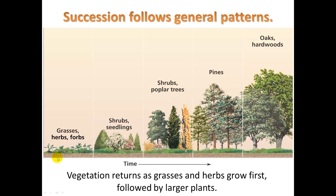There are some general patterns with this. In this diagram we have time on the horizontal axis. First we get grasses, herbs, and forbs coming in — things that are very good at growing without needing a lot of resources, and species with a good ability to spread their seeds. Over time we get larger shrubs and seedlings that eventually become large trees — oaks and hardwoods. These smaller shrubs and grasses create an environment in which young seedlings can then grow and eventually prosper into full trees.